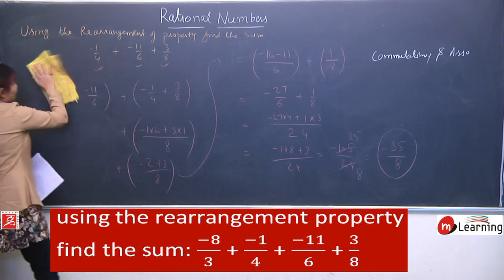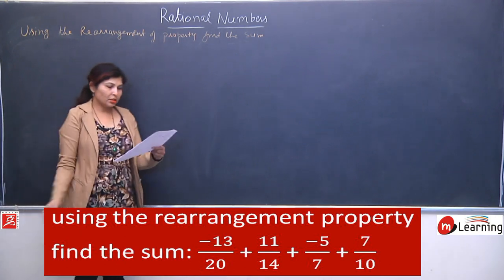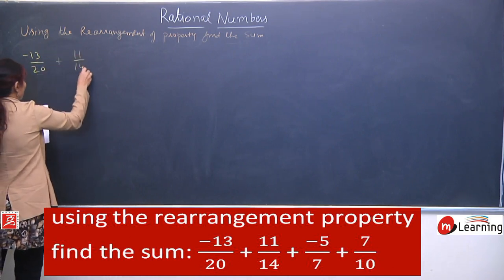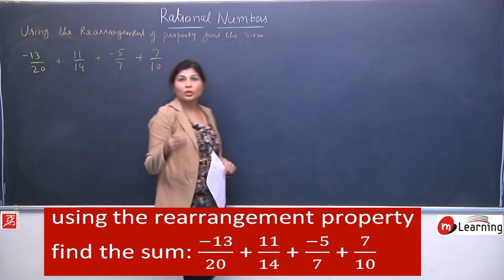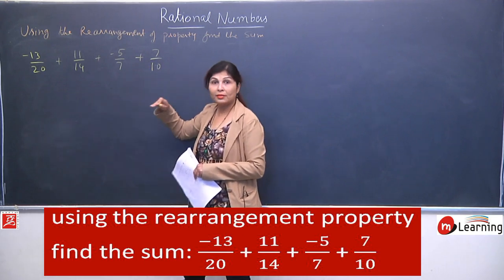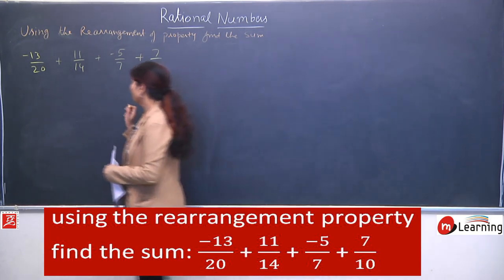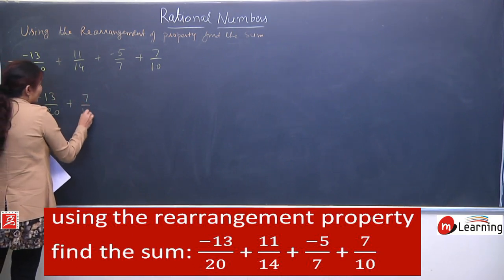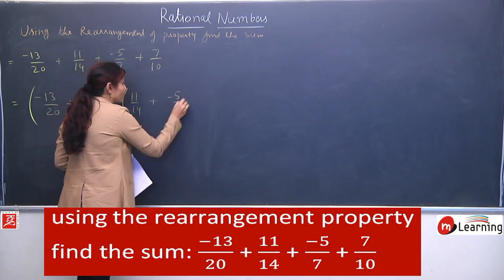Let's take another question of the same pattern so you become comfortable solving it. The question is: minus 13 upon 20 plus 11 upon 14 plus minus 5 upon 7 plus 7 upon 10. Again we observe the question first. 10 and 20 make a nice combination since LCM of 10 and 20 is 20. Similarly 7 and 14 both come in the table of 14, so that is also a good combination. We rearrange using commutativity and associativity: group minus 13/20 with 7/10, and 11/14 with minus 5/7.